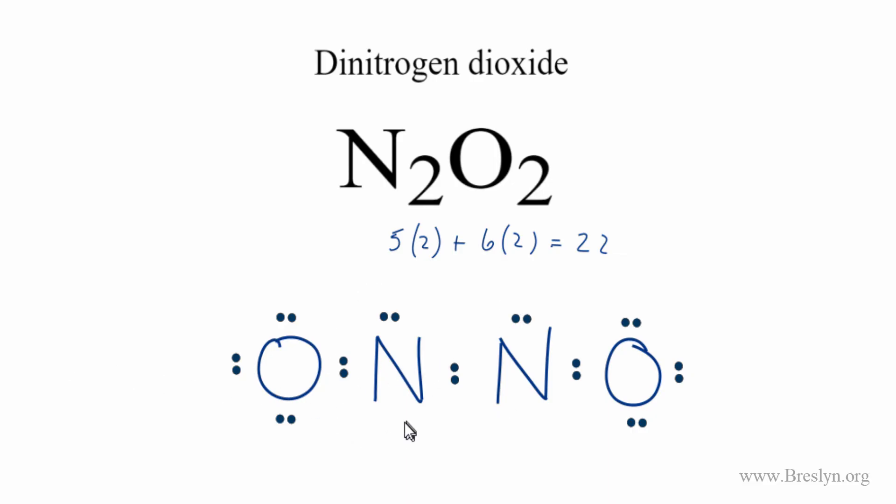So we've used all 22 valence electrons, but the nitrogens, they don't have octets. What we can do is move electrons here from the outside to be shared between the oxygen and the nitrogen. So now we have a double bond here. We're still only using a total of 22 valence electrons.